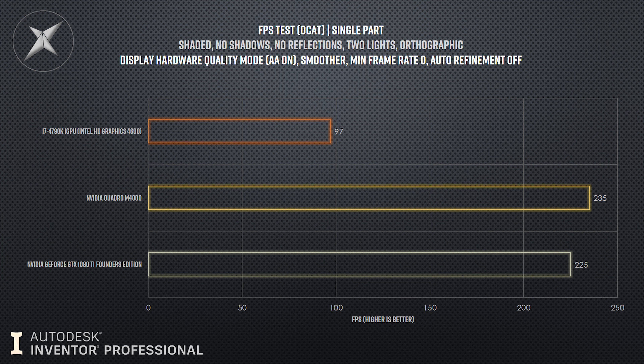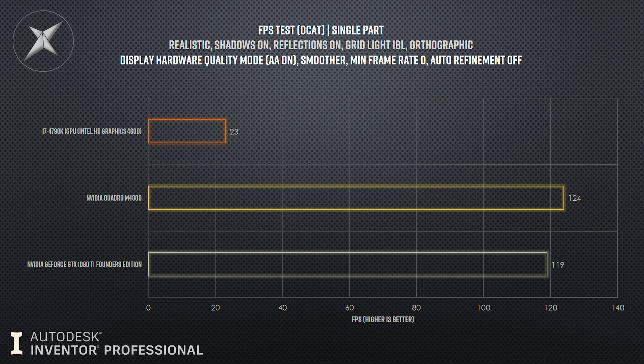Single parts and small assemblies on an IGPU handle it absolutely fine, though there is still a definite performance hit compared to the two dedicated graphics cards. The next test — single model with visual styles enabled, so textures cached, shadows on, reflections on — the FPS dropped to 23. There was visible lag and jerkiness, but it held all the elements with no visible degradation and worked just fine. Again, workable.